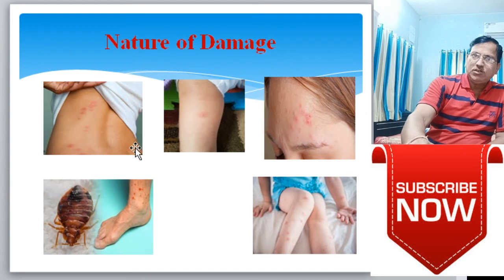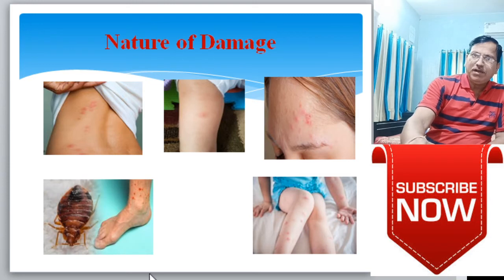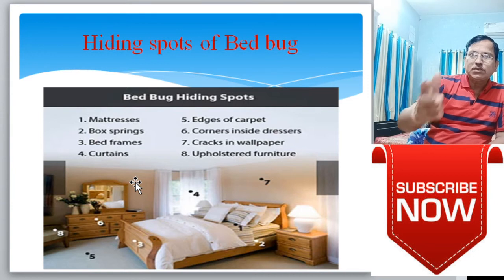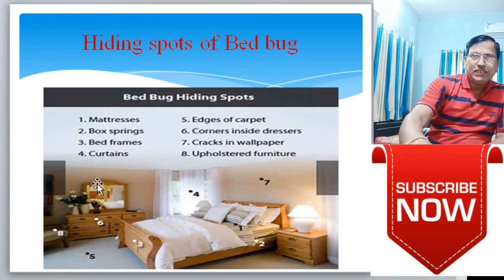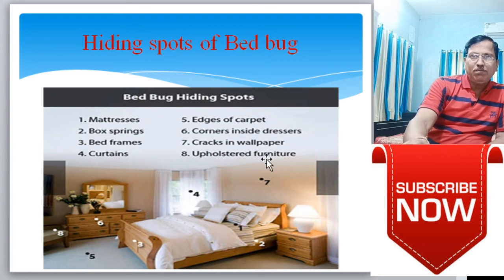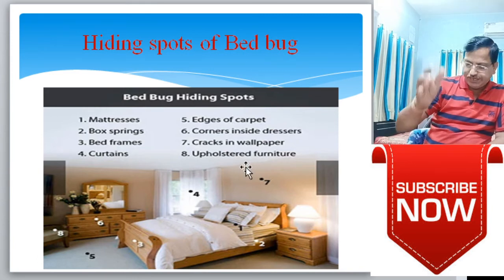Severe reactions to skin are caused by bed bug attacks. They attack the human body including legs and face; even children's small legs can be affected by lesions. Hiding spots of bed bugs in your house include: mattresses, box springs, bed frames, curtains, edges of carpet, corners, inside dressers, cracks in wallpaper, and old furniture where bed bugs hide.